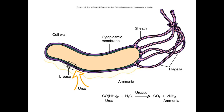Helicobacter pylori is a spiral gram-negative microaerophilic organism with sheathed flagella. To handle the hostile, very acidic environment of the stomach, it has an enzyme — urease — that takes urea and breaks it down to carbon dioxide (which accounts for the belching) and ammonia. The ammonia neutralizes the acidity, putting a sort of ammonia barrier around the cell that prevents stomach acids from destroying it.